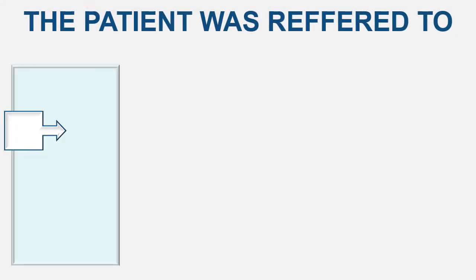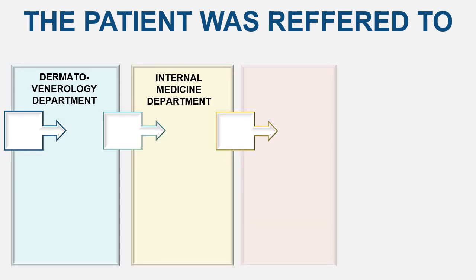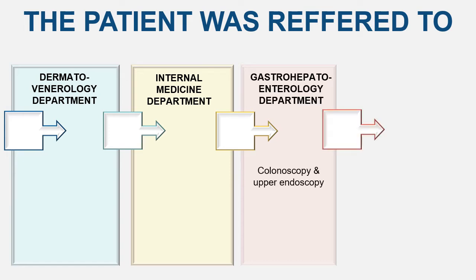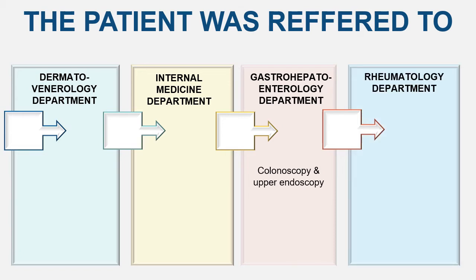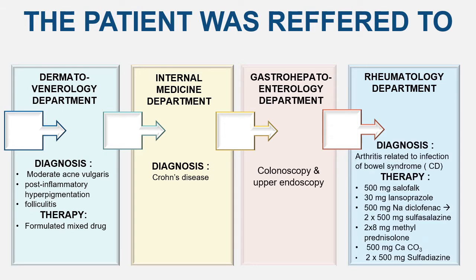The patient was referred to the Dermatology Department and Internal Medicine Department. From Internal Medicine, the patient was referred to the Gastrohepatoenterology Department for colonoscopy and upper endoscopy, and to the Rheumatology Department. He was diagnosed with moderate acne vulgaris, post-inflammatory hyperpigmentation, and folliculitis at Dermatology; Crohn's disease at Internal Medicine; and arthritis related to infection of bowel syndrome at Rheumatology.